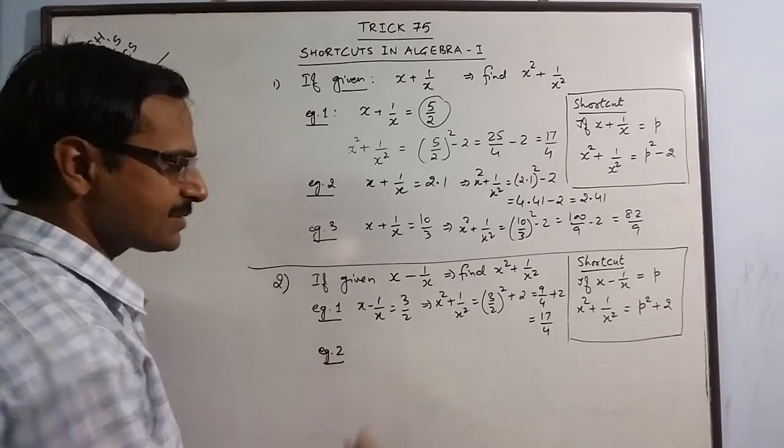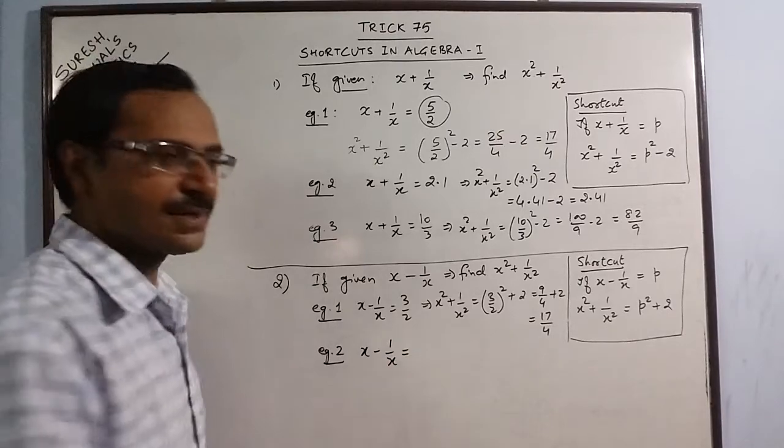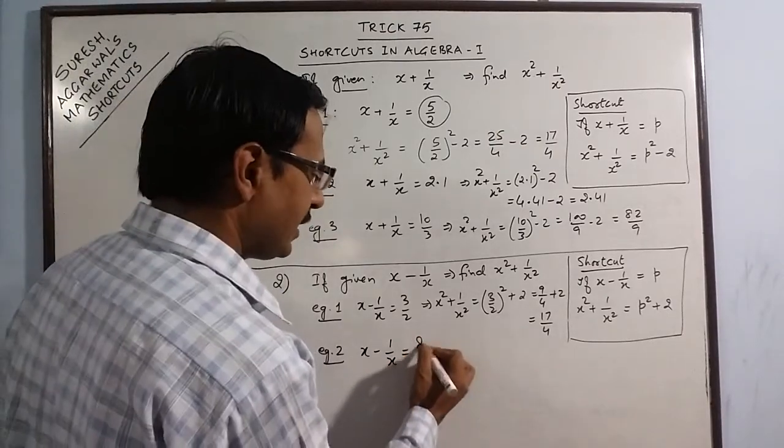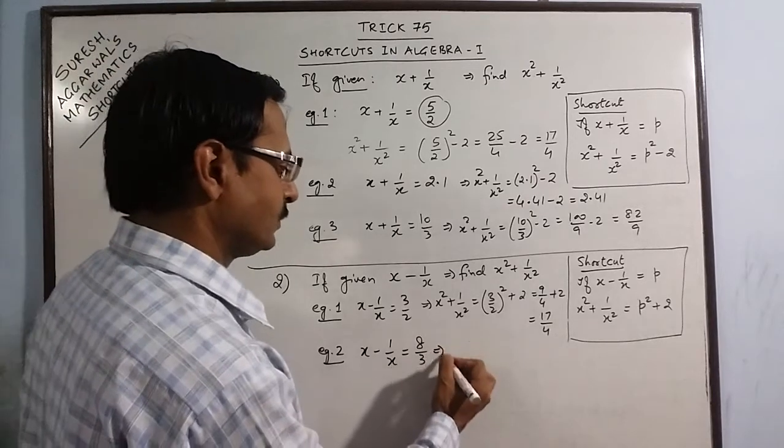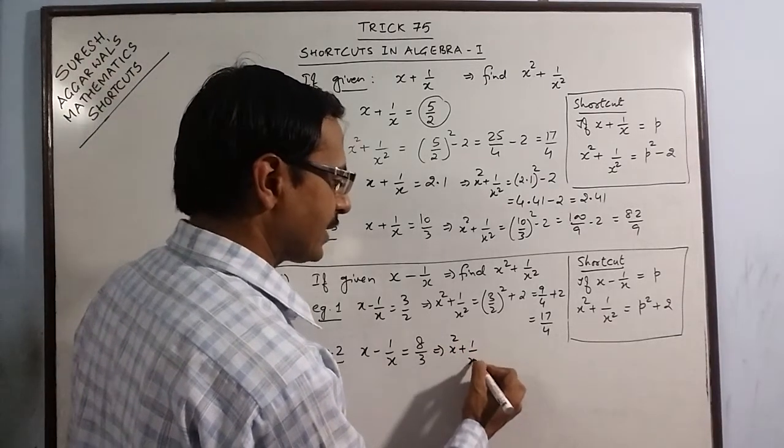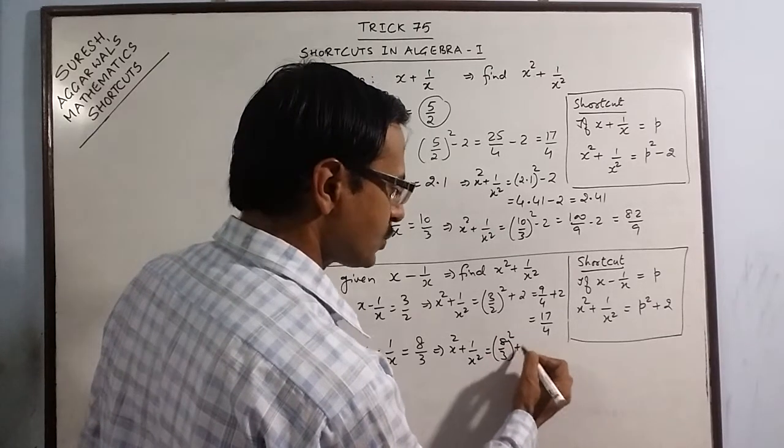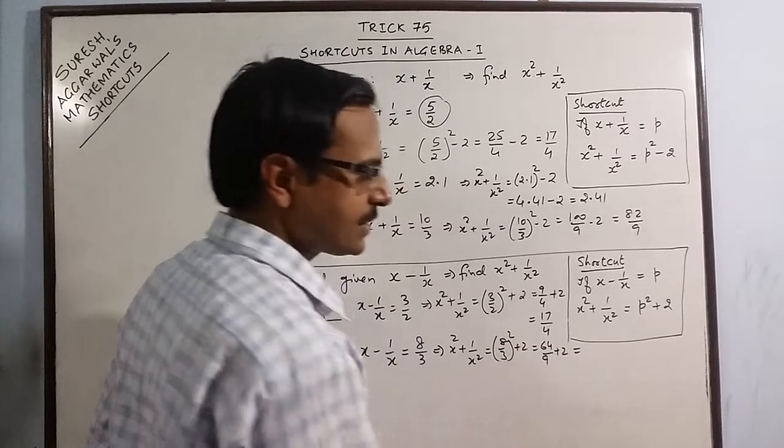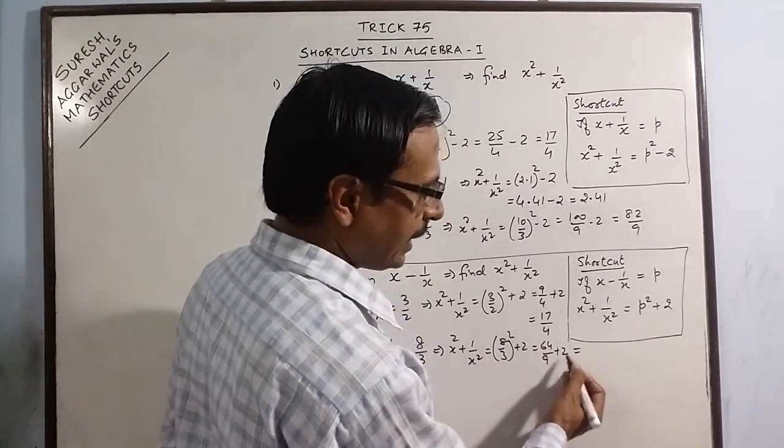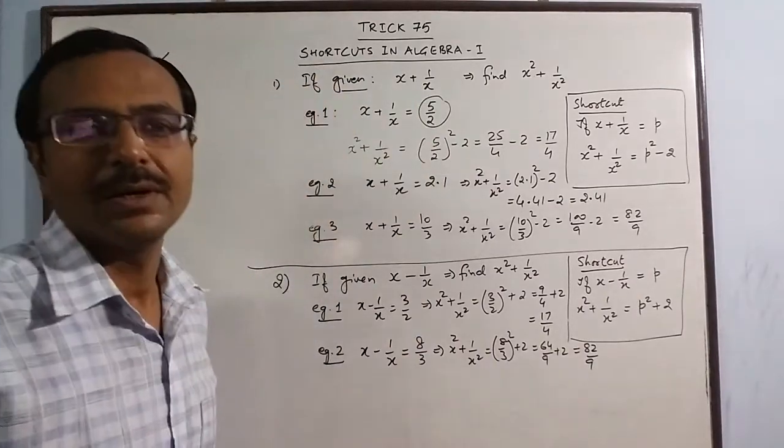Just to practice this method, another one. Say, x minus 1 by x is 8 upon 3. The value of x squared plus 1 over x squared will be the square of 8 upon 3 plus 2. This is 64 upon 9 plus 2. We have to add 18. So 82 upon 9 is the answer.